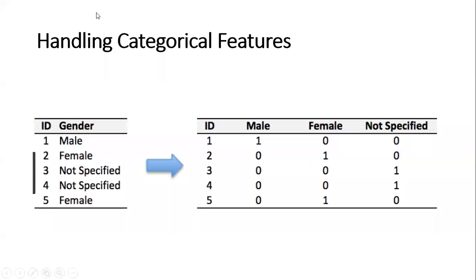Hello all. Today we will be seeing how we can handle categorical features and we will also try to implement it using Python. So whenever we get a machine learning use case and the dataset that we receive, in most of the features you will find this kind of categorical features. Let us first understand what categorical features are, what are the different ways to handle them, and we'll also see the various tools like sklearn and pandas and how we can do that.